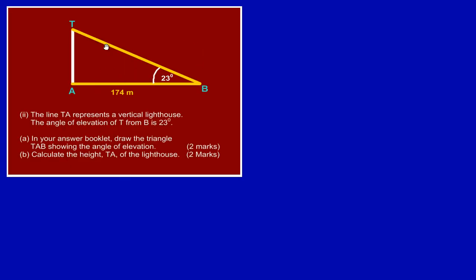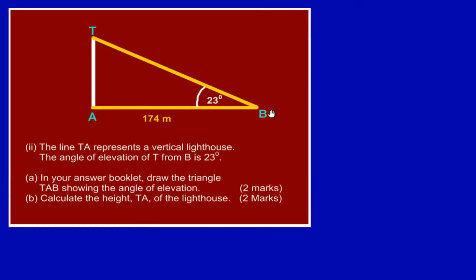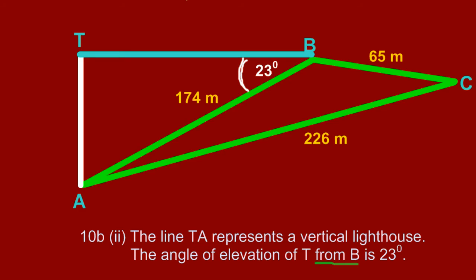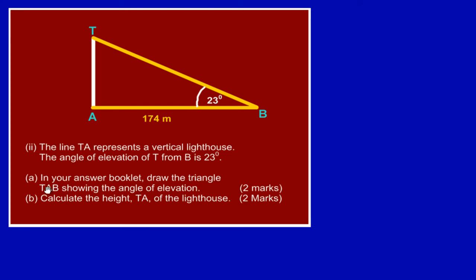Here we have it. This is how your diagram would look on the answer booklet. So AB would be 174. Let me just switch back boards just to show you so that you have a clear view of what is happening. If you notice AB in the initial drawing when they gave us the triangle ABC, they had given us this line segment AB was 174. So this would be at the base, and then we would have our angle there. So you could always pause the video and look at it. That's an easy two marks. Drawing the triangle TAB showing the angle of elevation, this would be two marks.